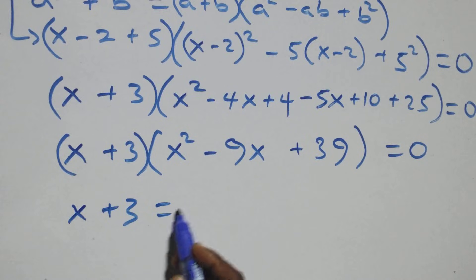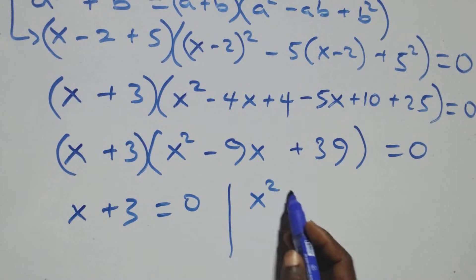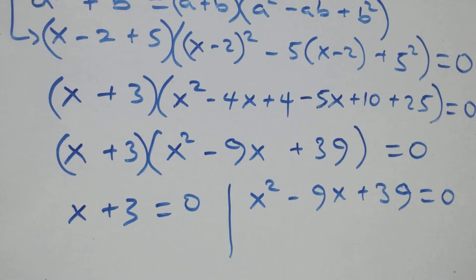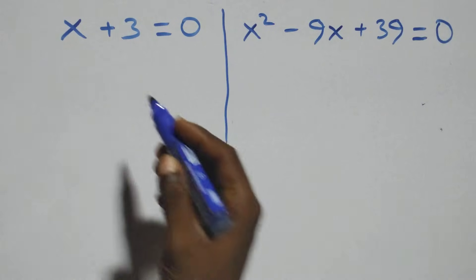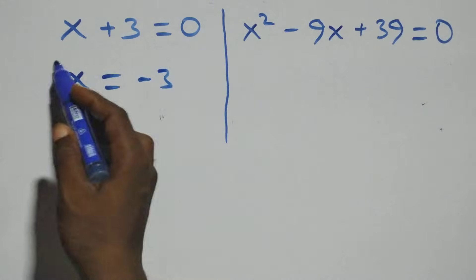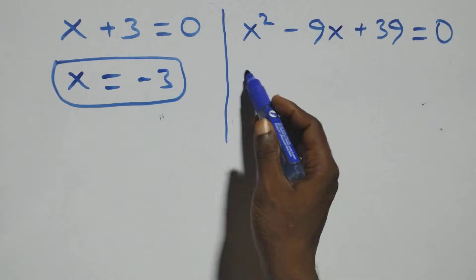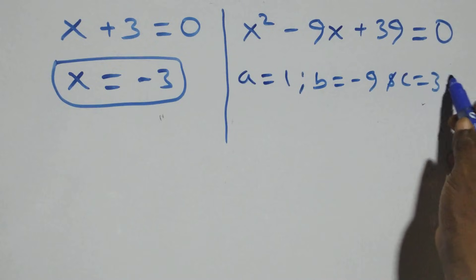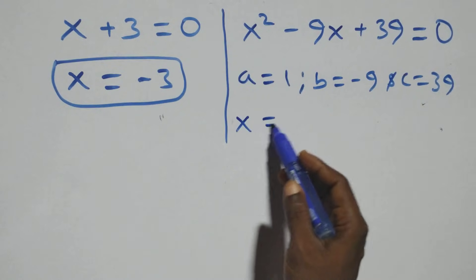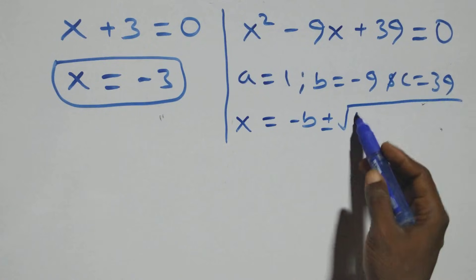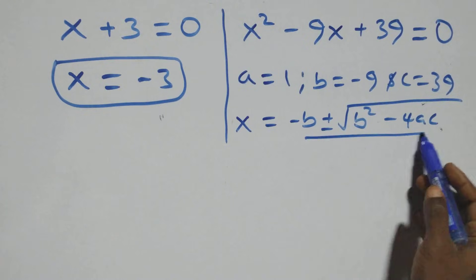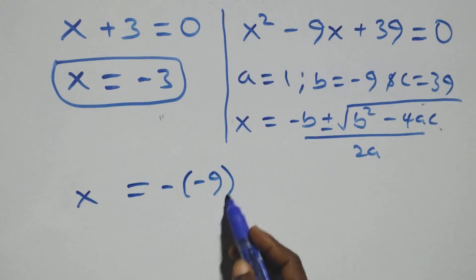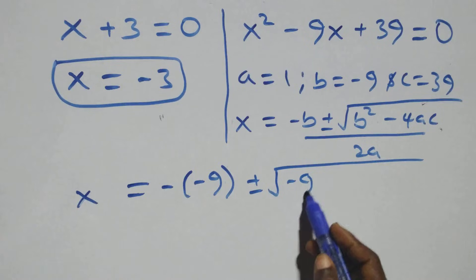We have two possible cases: x plus 3 equals 0, giving x equals minus 3, which is the real solution. Or x² minus 9x plus 39 equals 0. For the quadratic, a equals 1, b equals minus 9, c equals 39. Applying the quadratic formula: x equals minus b plus or minus square root of b² minus 4ac, all over 2a.